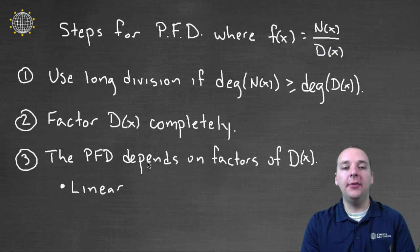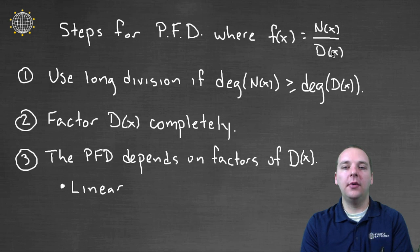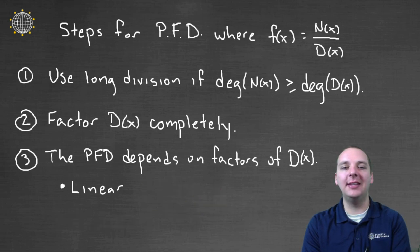The partial fraction decomposition of this function kind of depends on what the factors of the denominator looked like. And here's what I mean. If the factors in the denominator are linear, as in like x minus 2, x plus 7, 3x minus 1, something like that, then you would decompose it a certain way. But if the factors of the denominator wind up being quadratic, then you do partial fraction decomposition a slightly different way. It has different terms that are contributed to the decomposition. Now, those details I'll unpack in the next video.